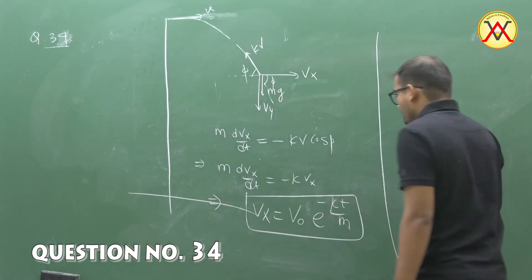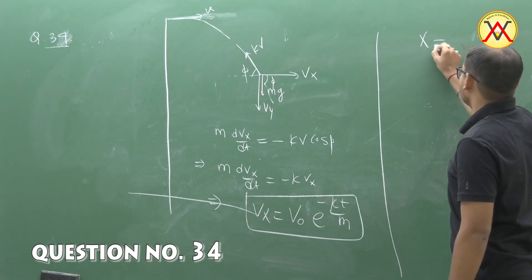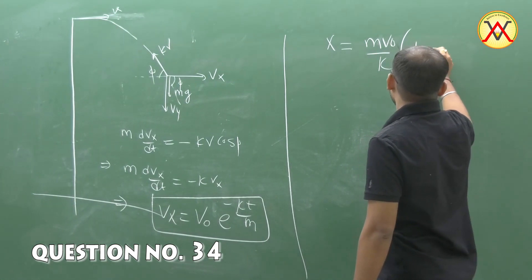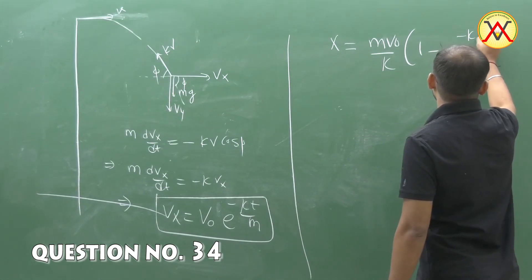And further solving this equation, we can say that x equals mv0 by k times 1 minus e to the power minus kt by m.